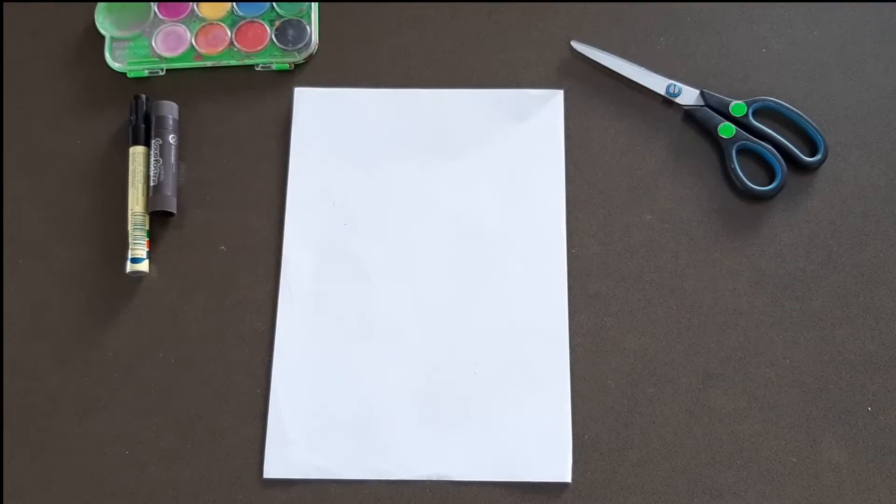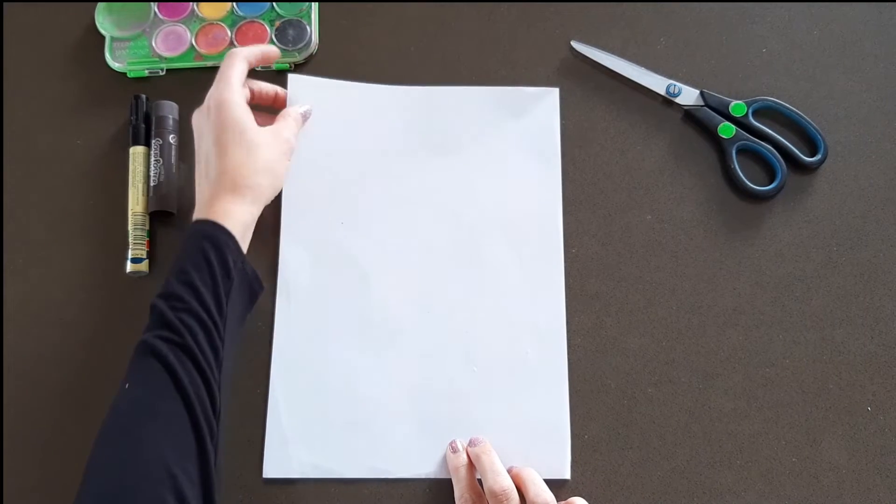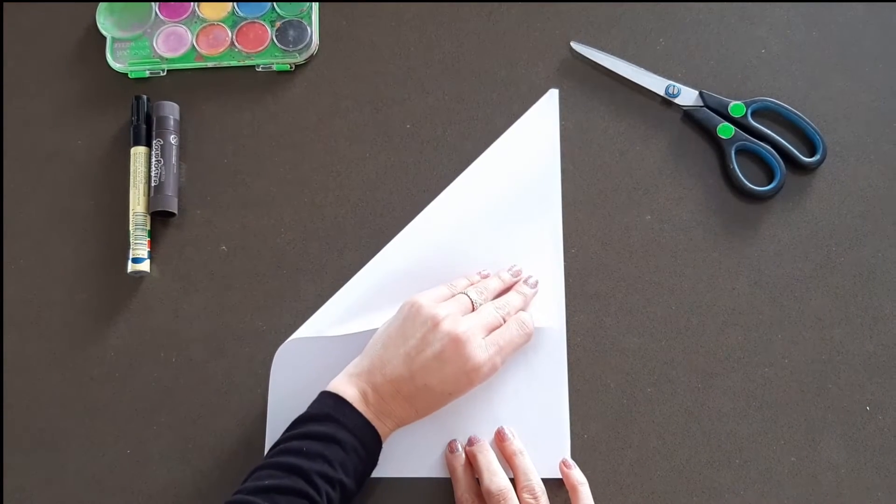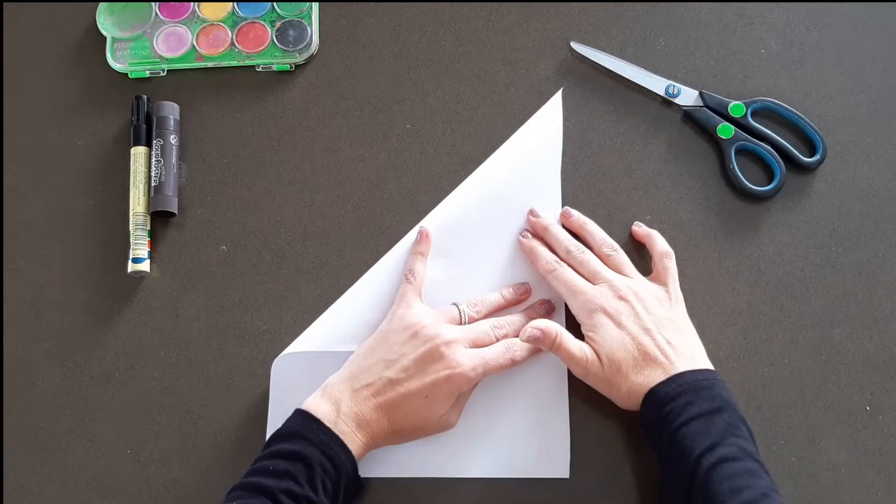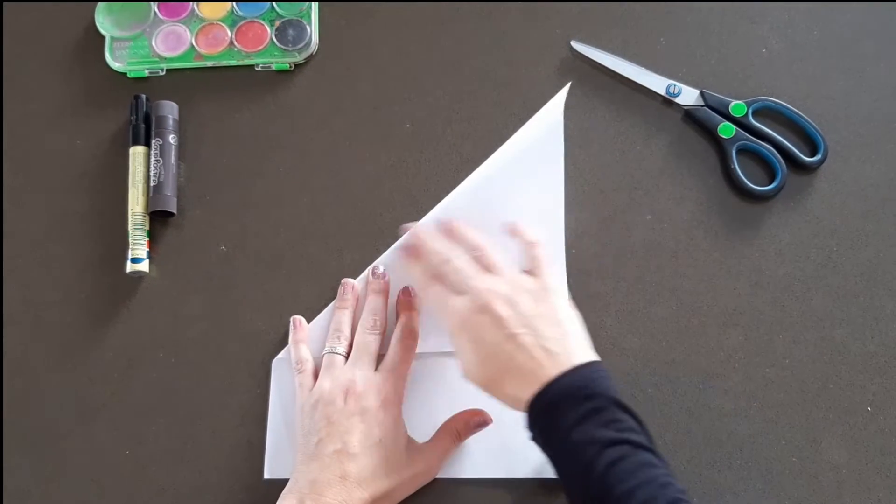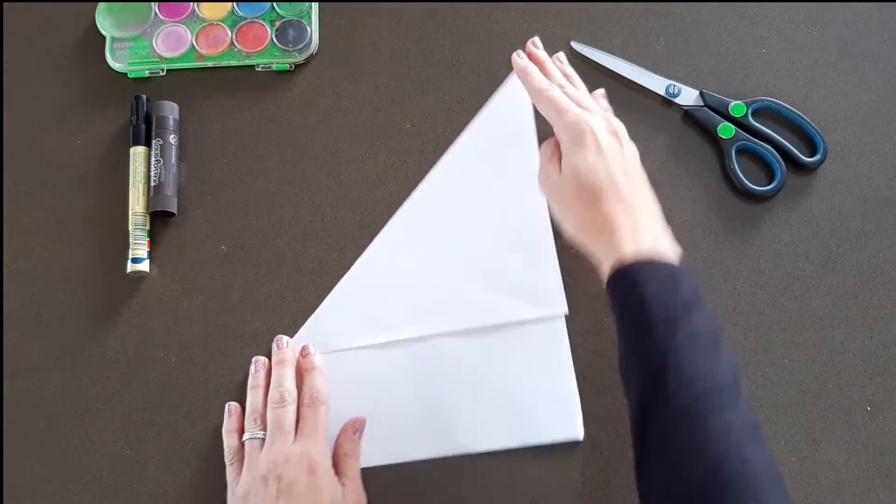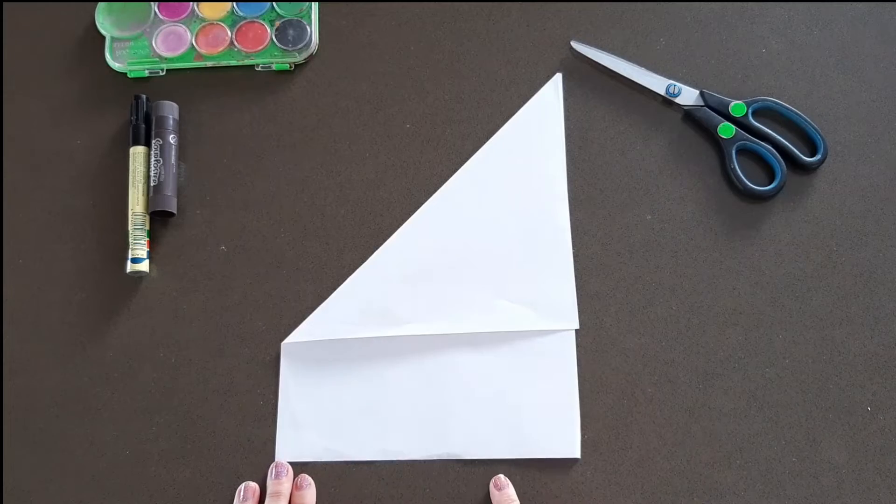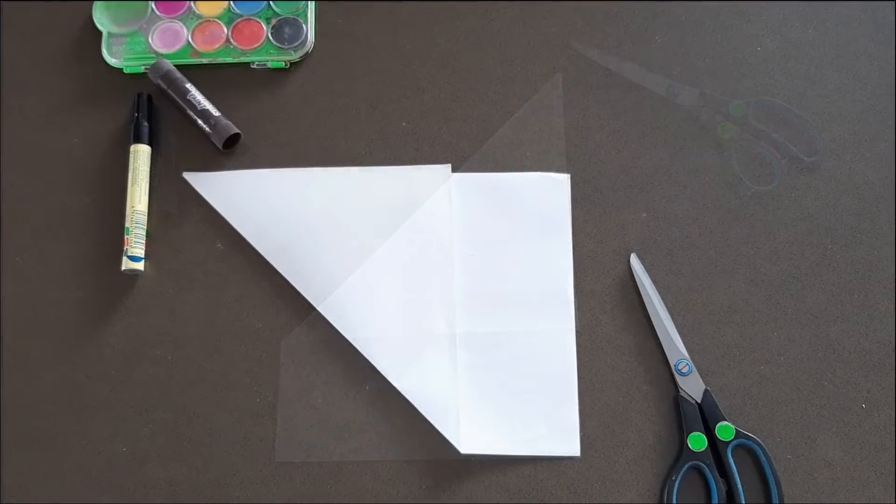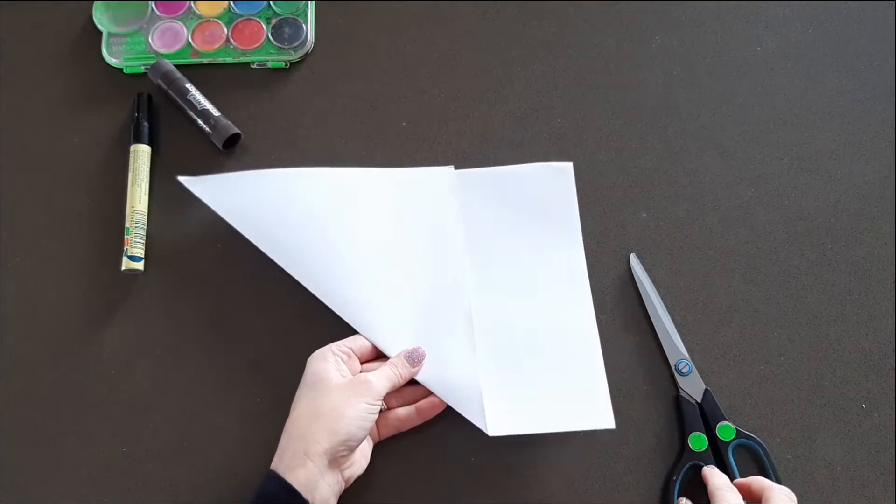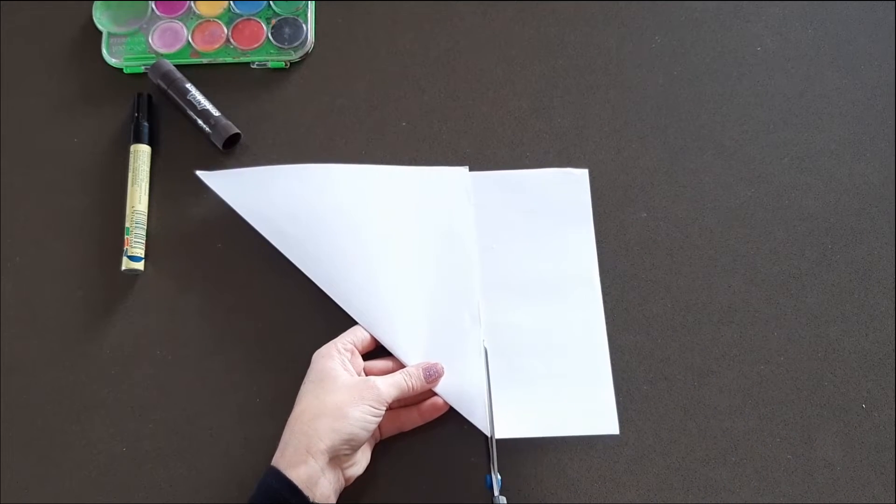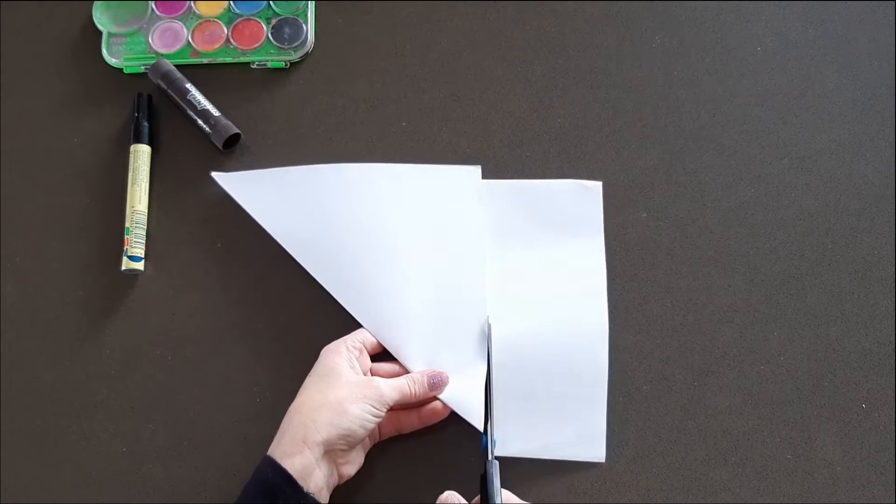To start, take the top corner and fold it down so that it is even with the opposite side. Now you almost have a sailboat. Cut the bottom piece off so that you can just see your triangle.